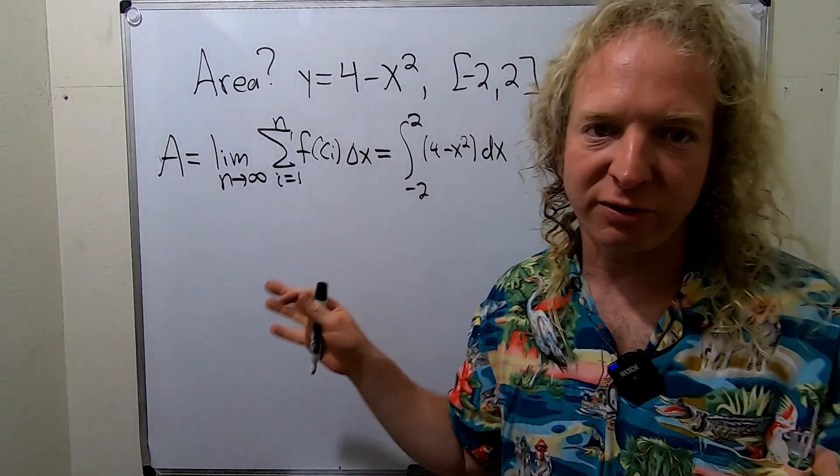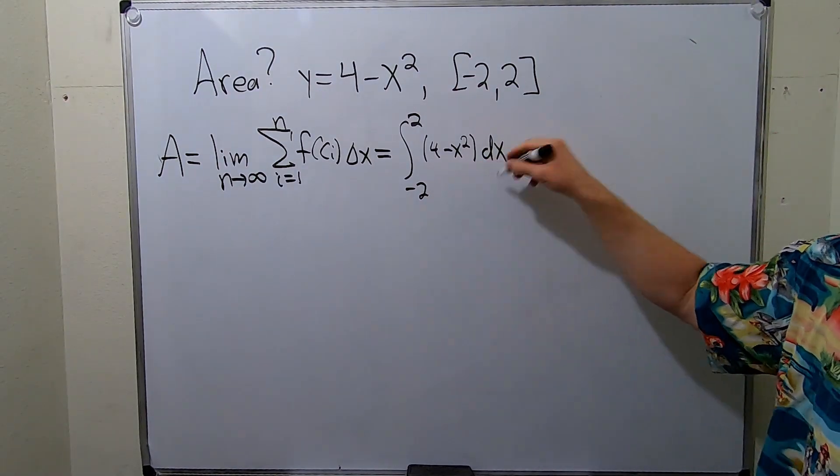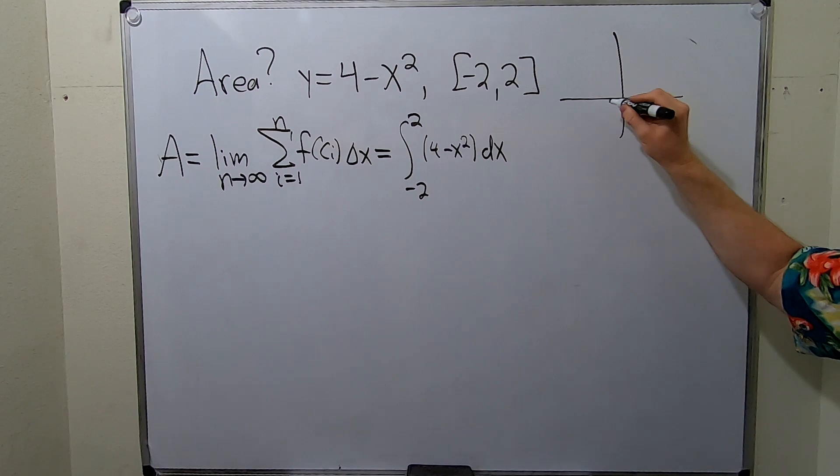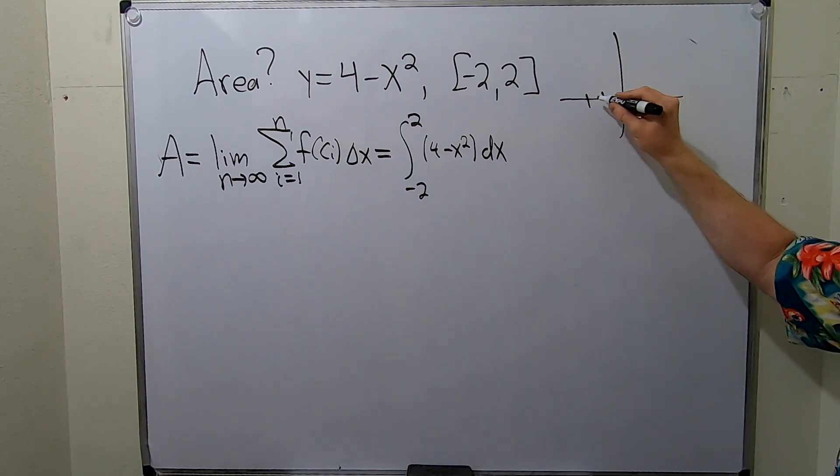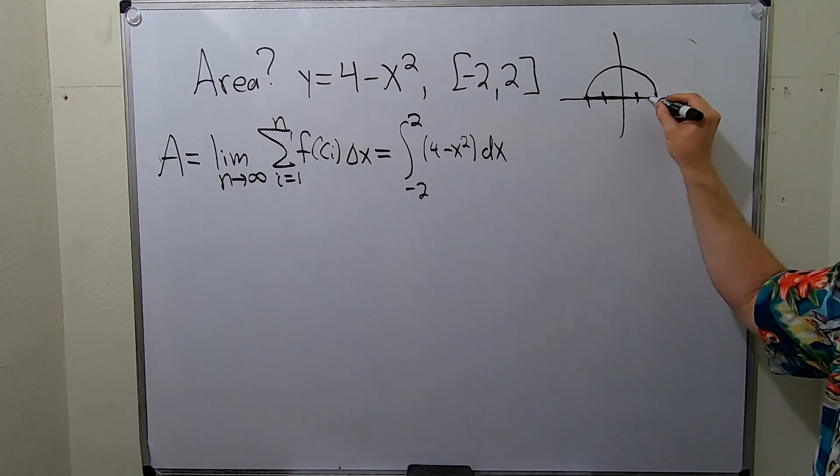Let's draw a picture of what we're actually finding and that's going to let us take a really cheap shortcut. So this is an upside down parabola and it goes from negative 2 to 2. It looks like this and so we're finding the area under this parabola.